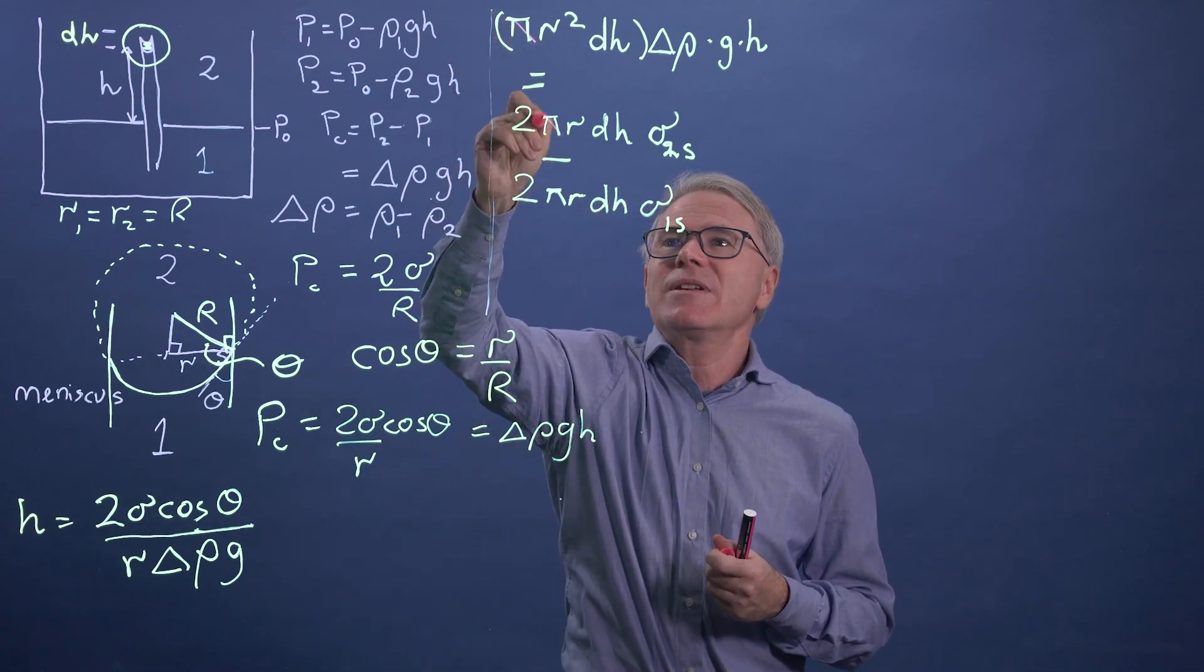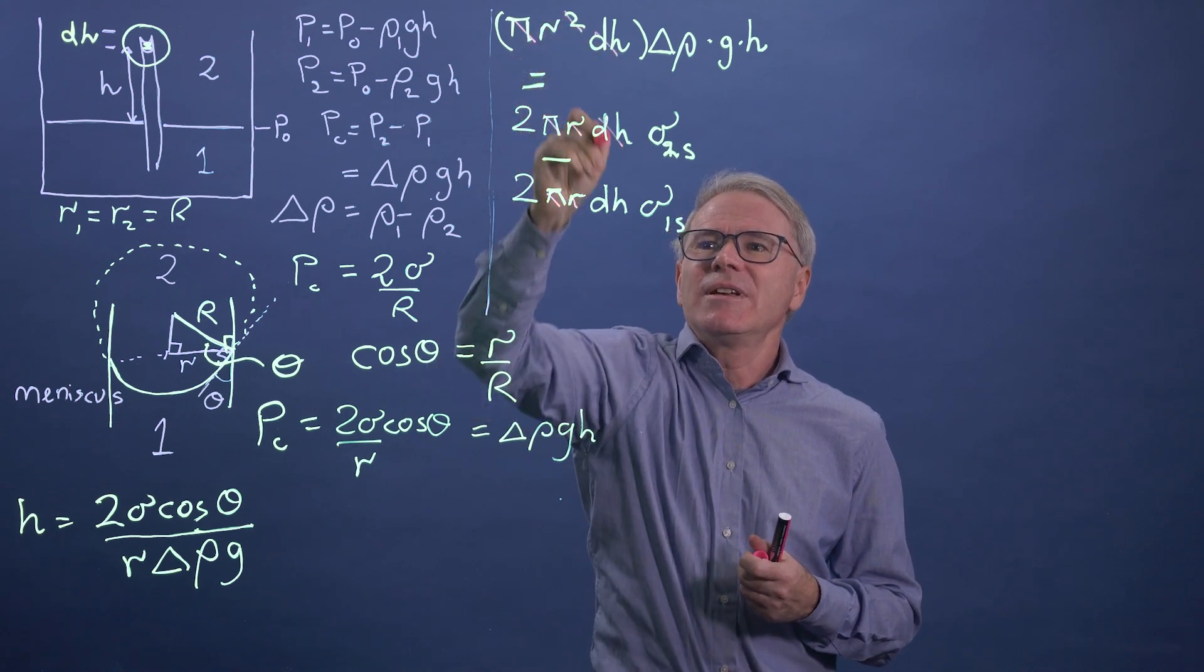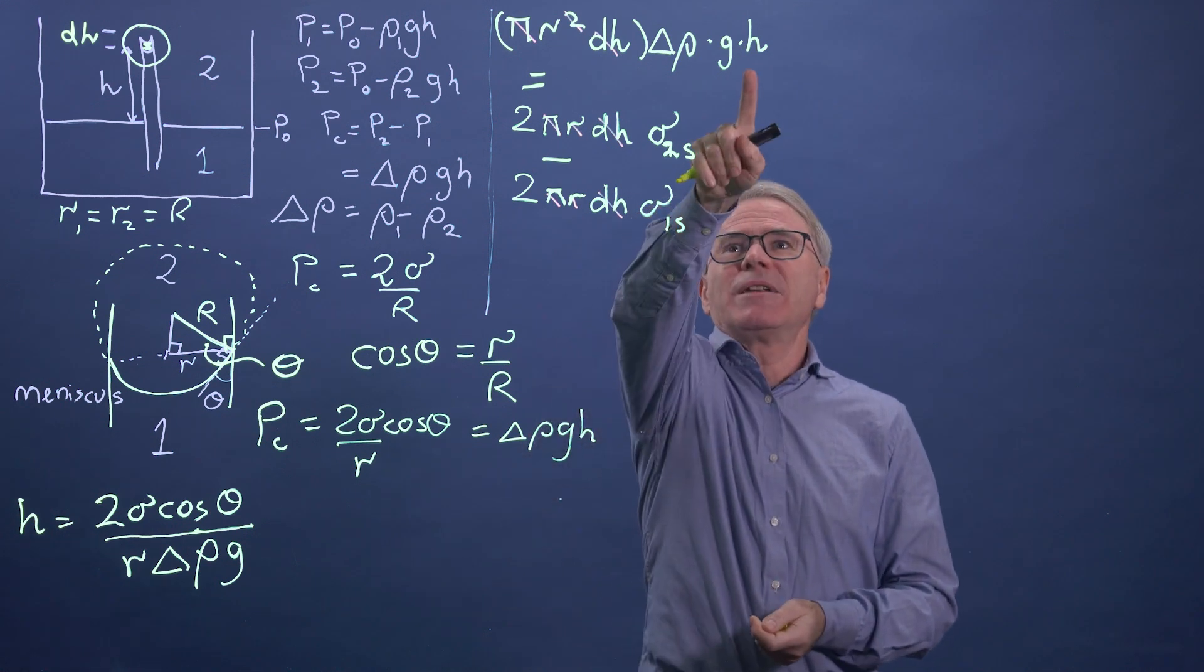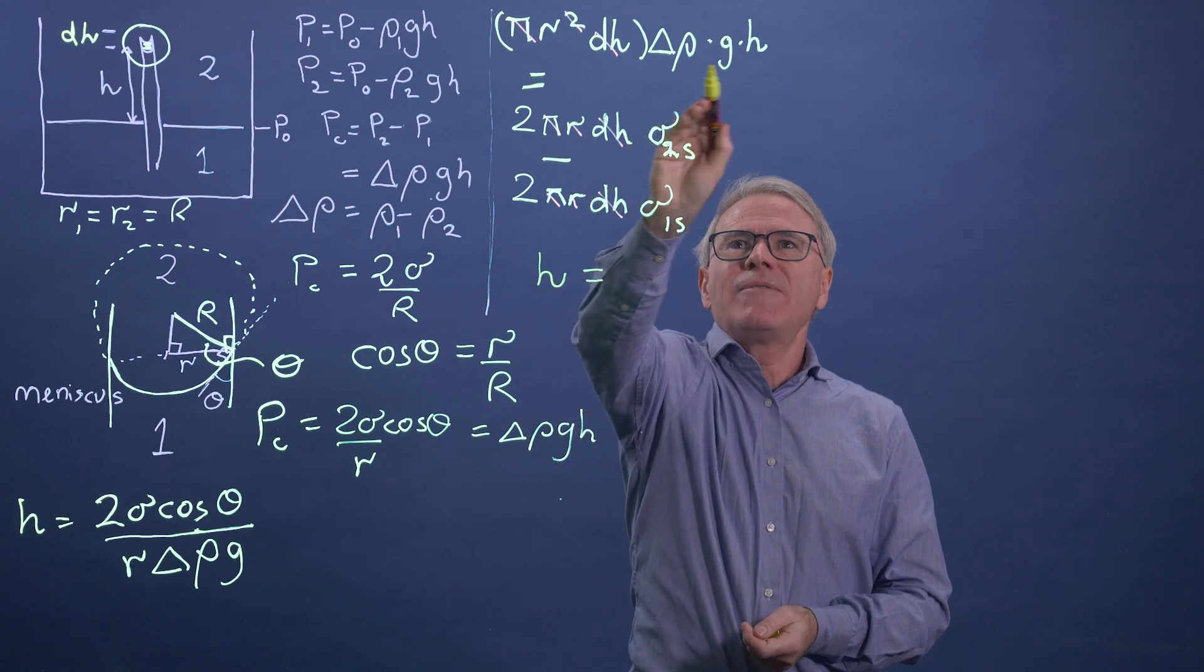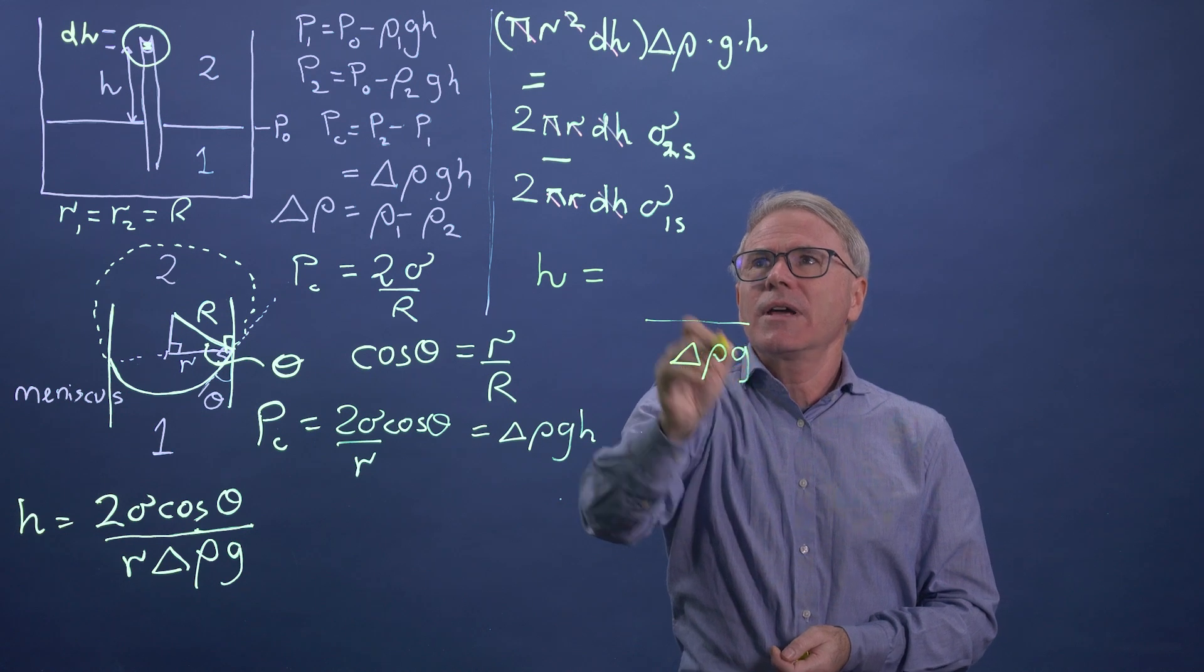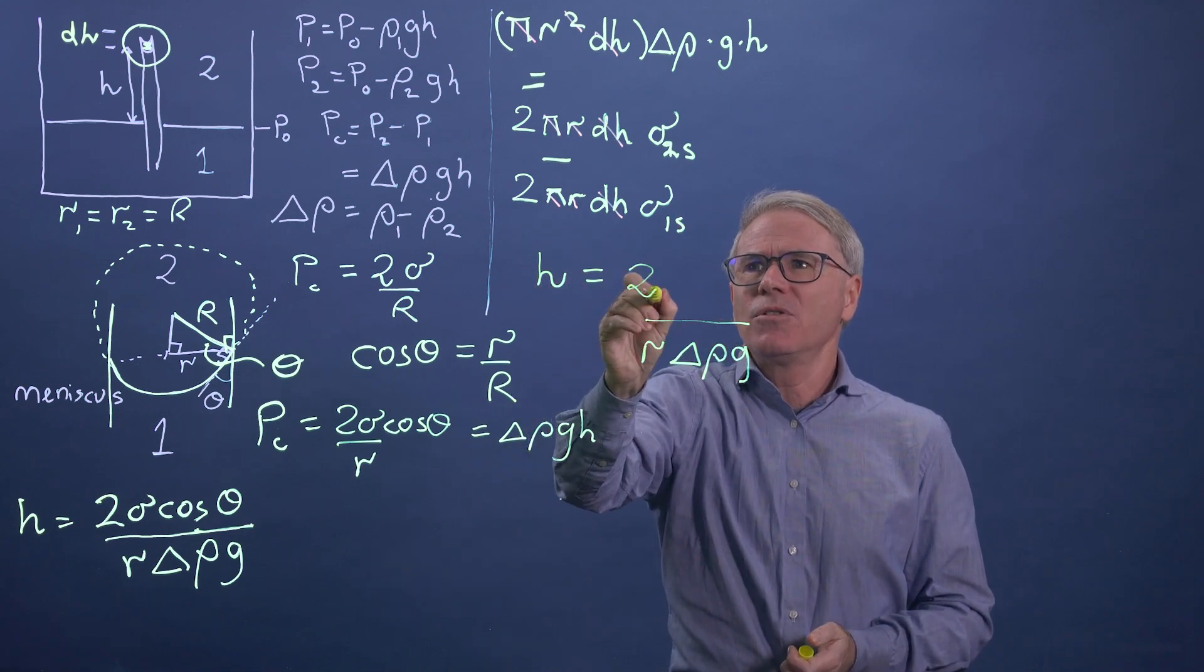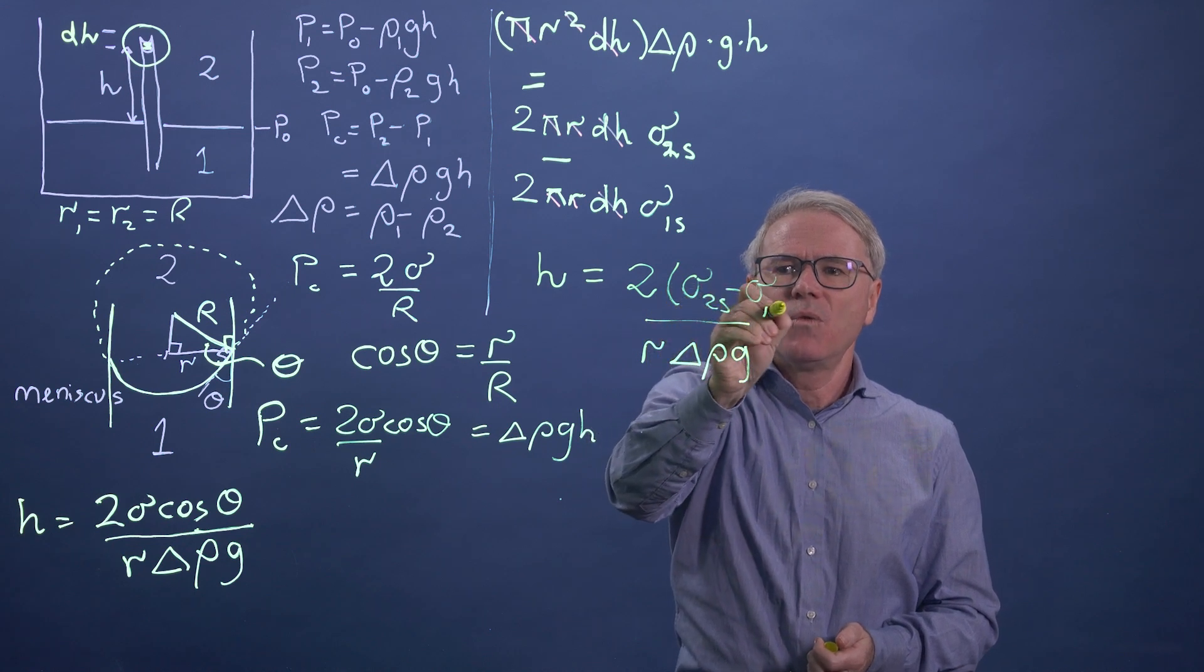So now let's go through that carefully and see if there are any terms we can cancel. You'll see there's a pi that's going to cancel everywhere. There's a radius that's going to cancel. And dh is again, it's a dummy. Now we get an equation for h directly from energy balance. So we've got the h here. We're going to have a delta rho g on the denominator. We're going to have an r on the denominator. And then here we have two, and that's sigma 2s minus sigma 1s.